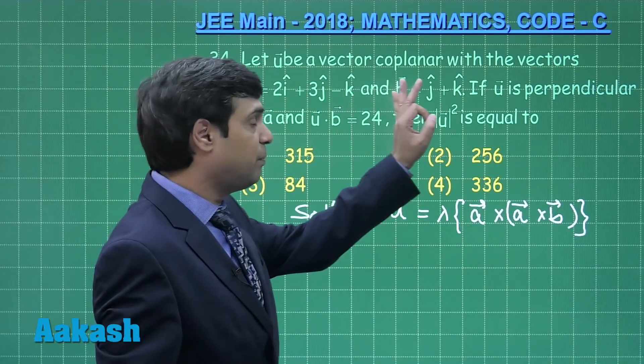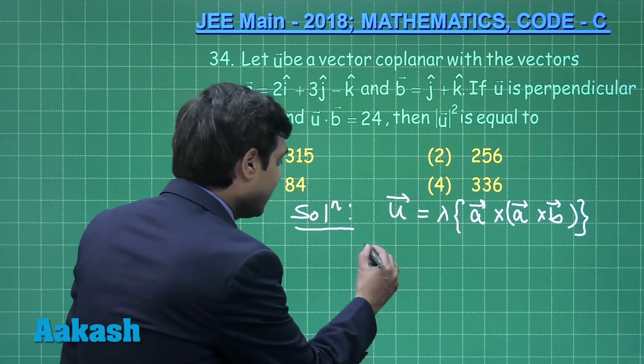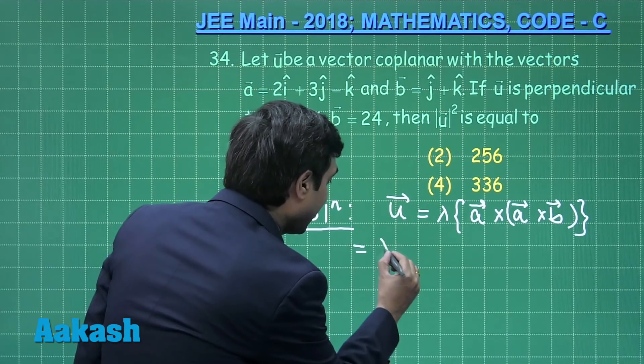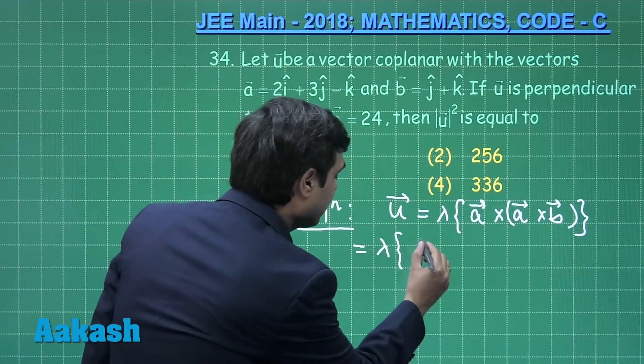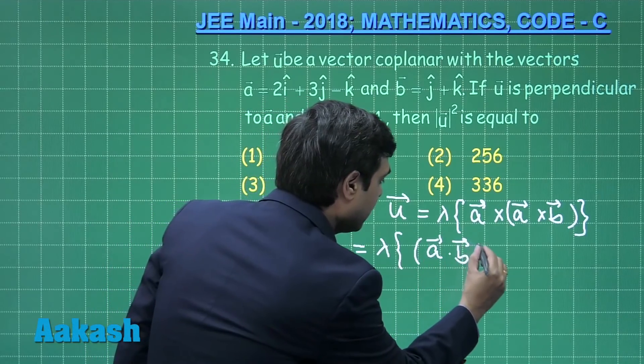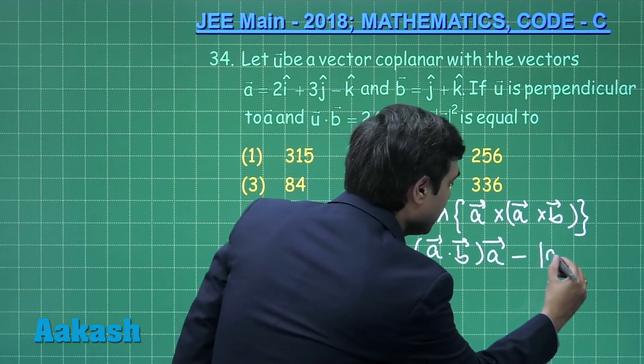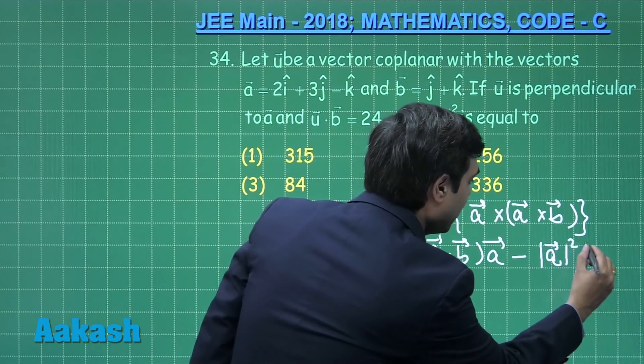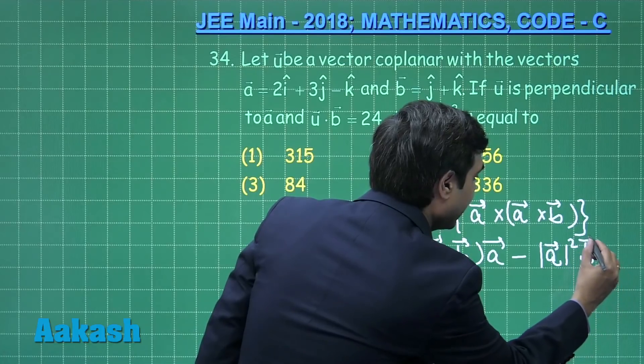Now, a vector and b vector are given to us. We can rewrite this as lambda times a dot b into a vector minus mod a square into b vector.